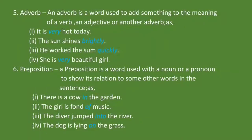Preposition: A preposition is a word used with a noun or a pronoun to show its relation to some other words in the sentence. Noun और pronoun का संबंध वाक्य के दूसरे शब्दों के साथ जो शब्द बताता है, उसे preposition कहते हैं. जैसे, There is a cow in the garden. यहाँ in preposition है क्योंकि यह cow का संबंध garden से बता रहा है. The girl is fond of music. यहाँ of preposition है. The diver jumped into the river. यहाँ into preposition है. The dog is lying on the grass. यहाँ on preposition है.